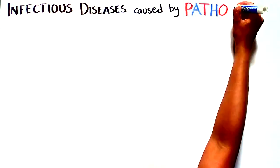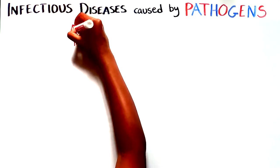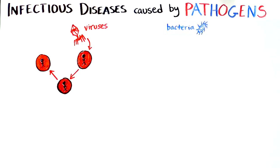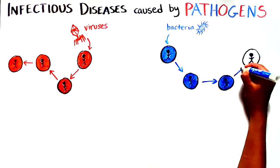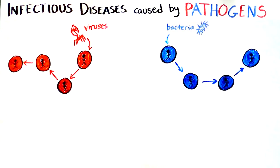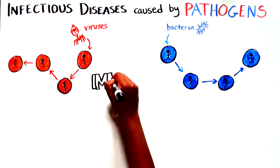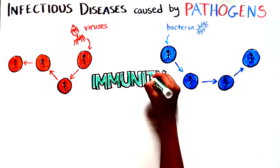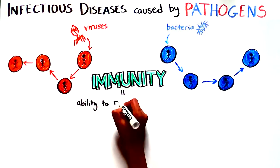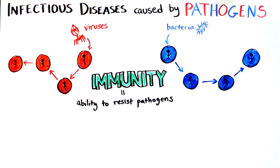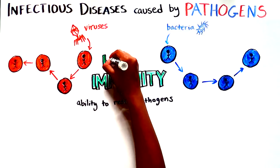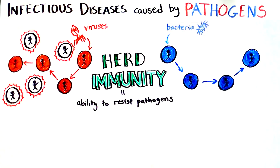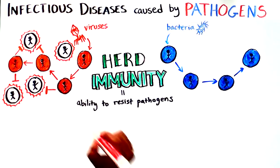Infectious diseases are caused by pathogens like viruses or bacteria that can jump from one person to the next. So how can we stop the cycle of transmission? The simple answer is immunity — our body's ability to resist a pathogen via the immune system. Today we'll talk about herd immunity: immunity zoomed out to the level of the population.